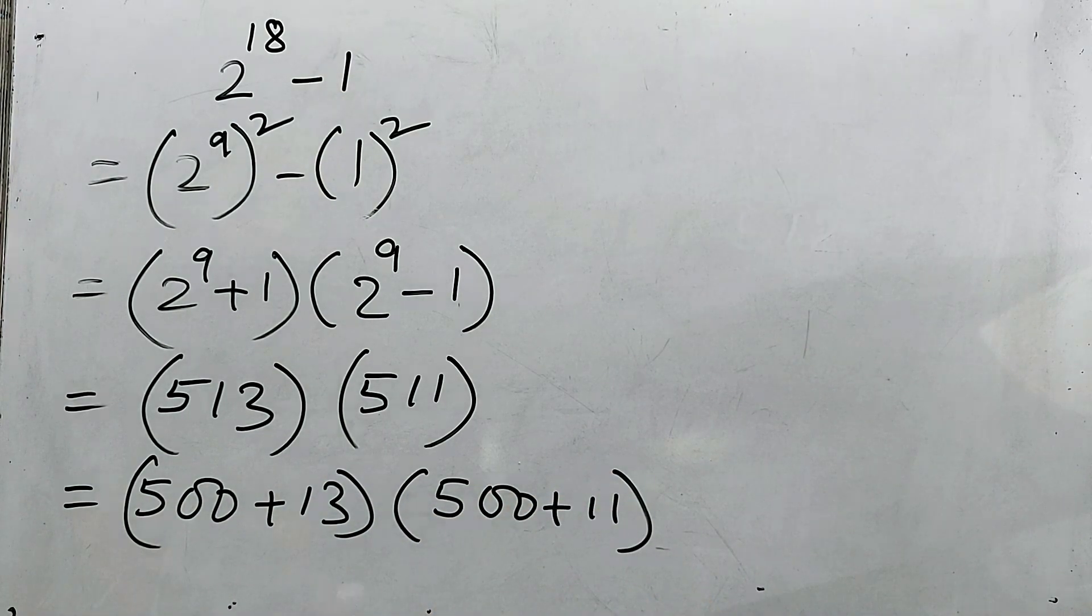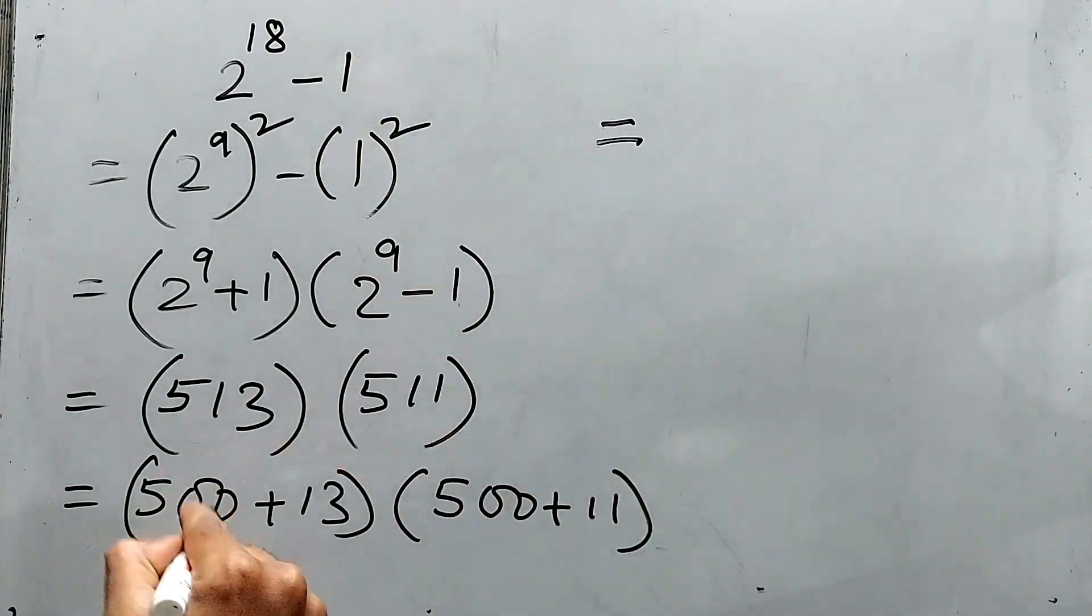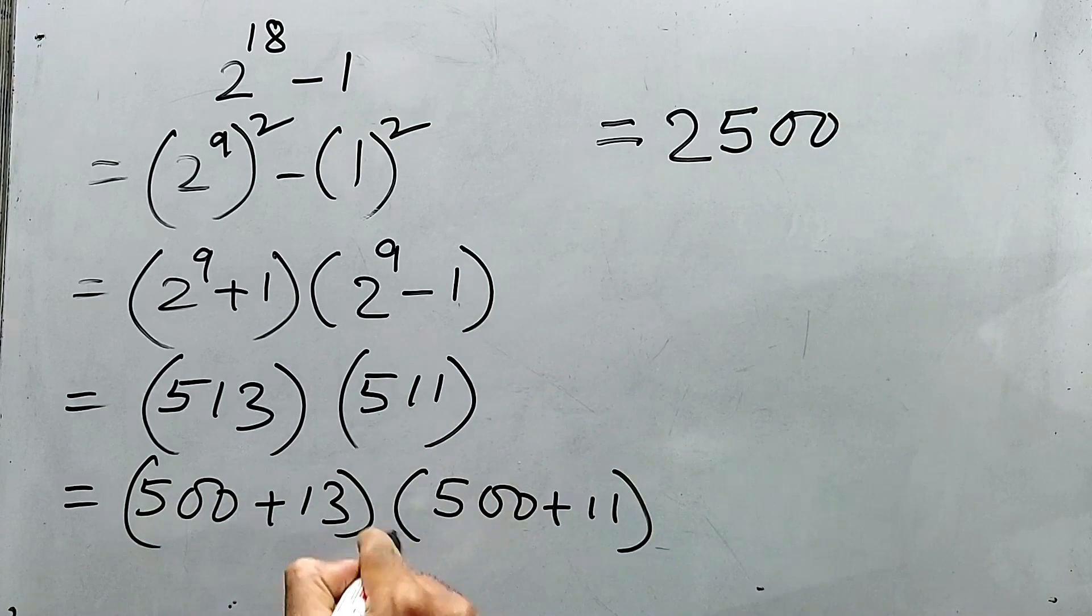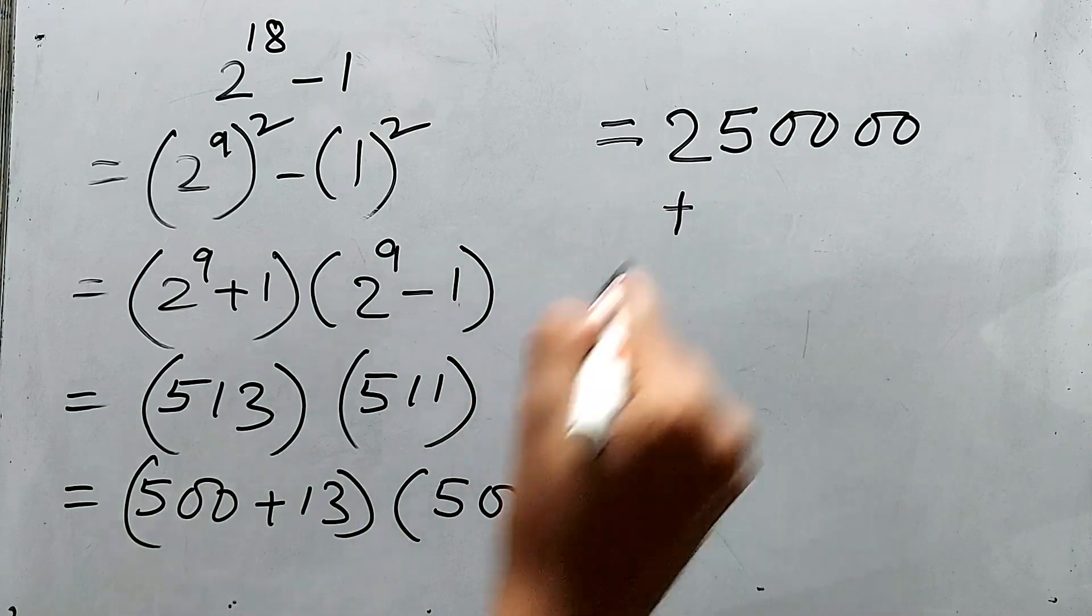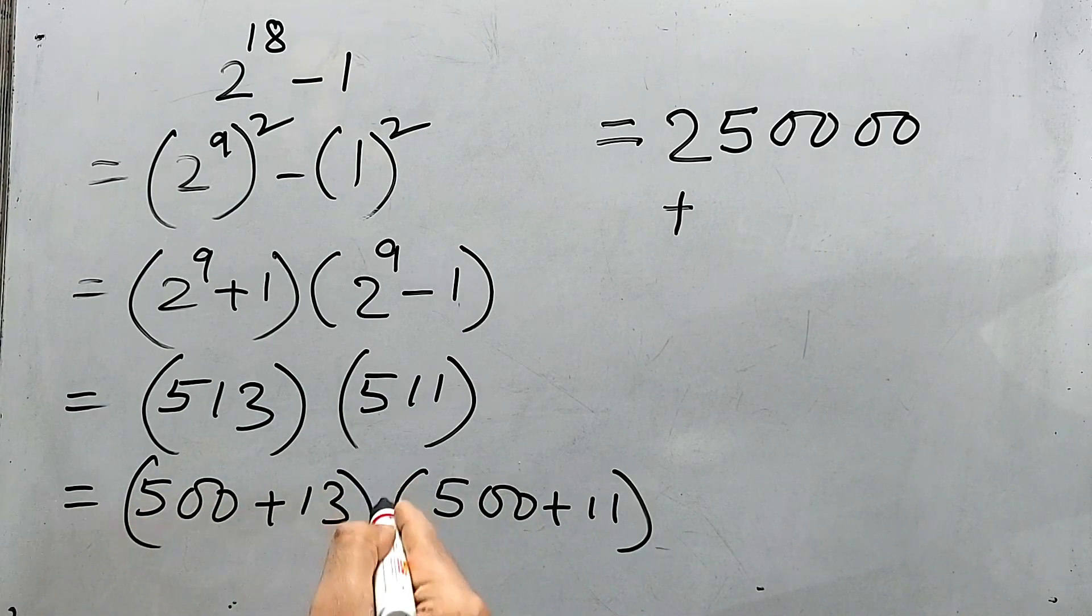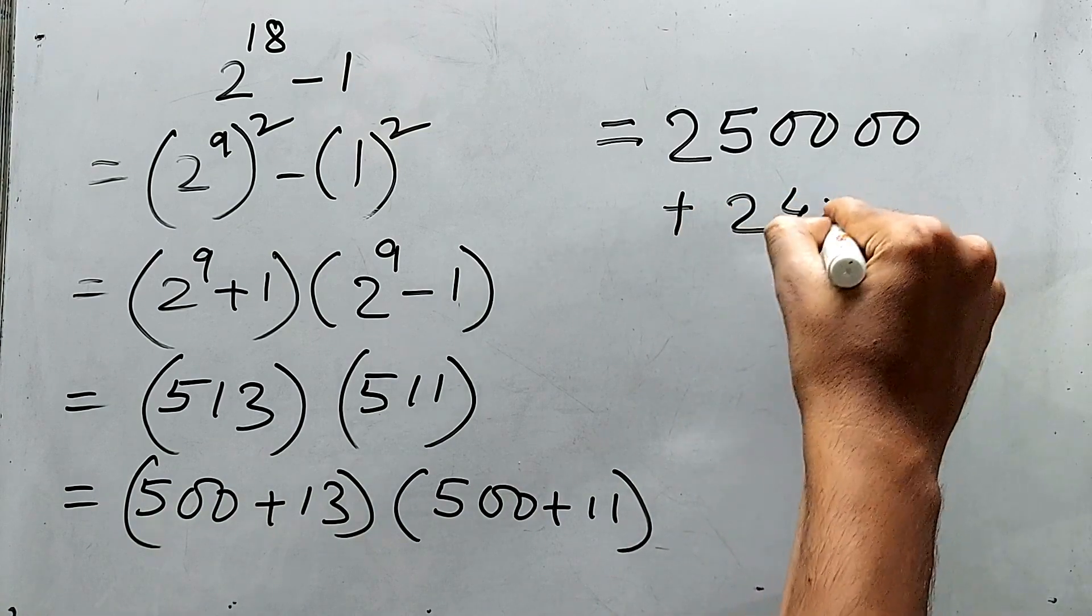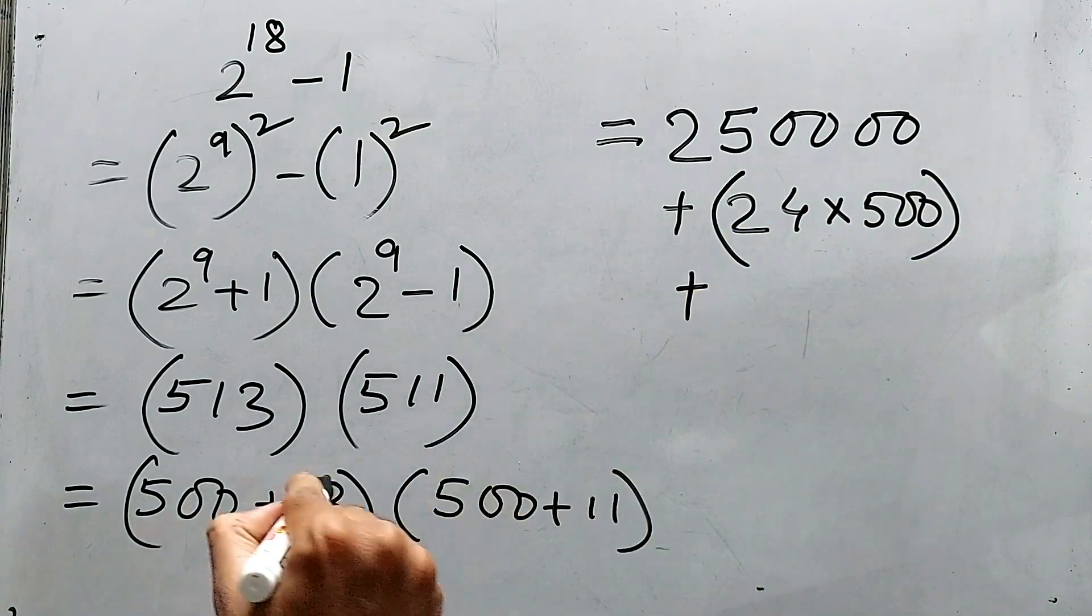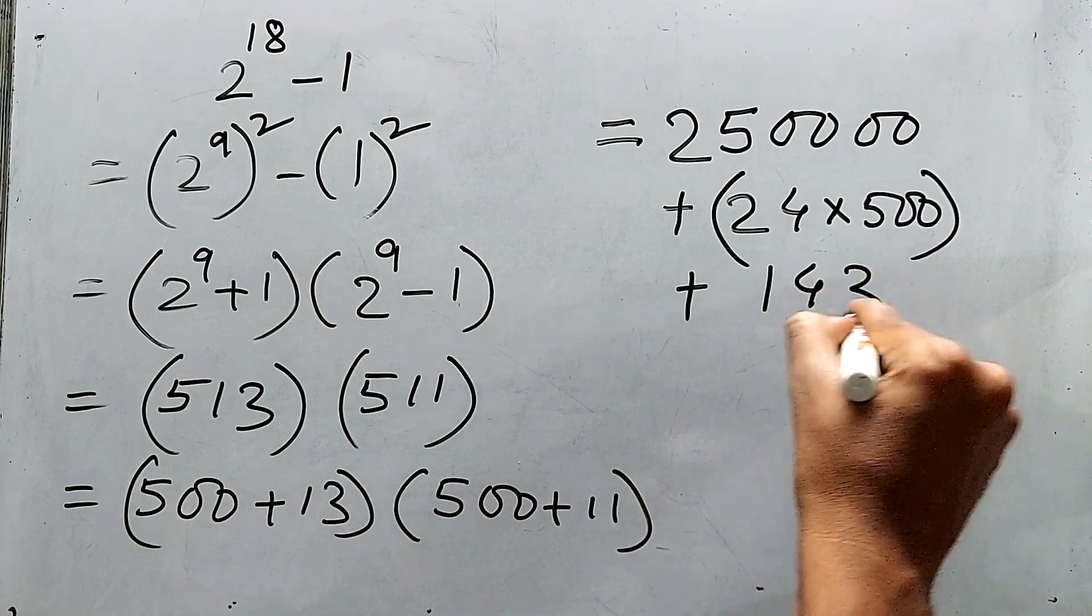Now what is the value of 500 into 500? Let us write it here. That is 5 into 5 is 25, then double 0 from here and double 0 from here, so 250,000. Plus 13 into 500 plus 11 into 500. We can take common 500, and 13 plus 11 is 24. So 24 into 500, and last part 13 into 11, that is 143.